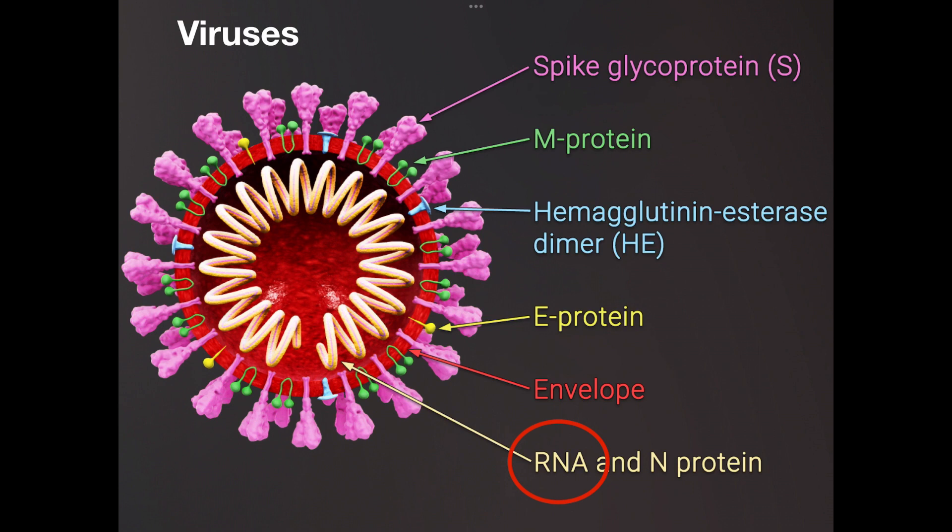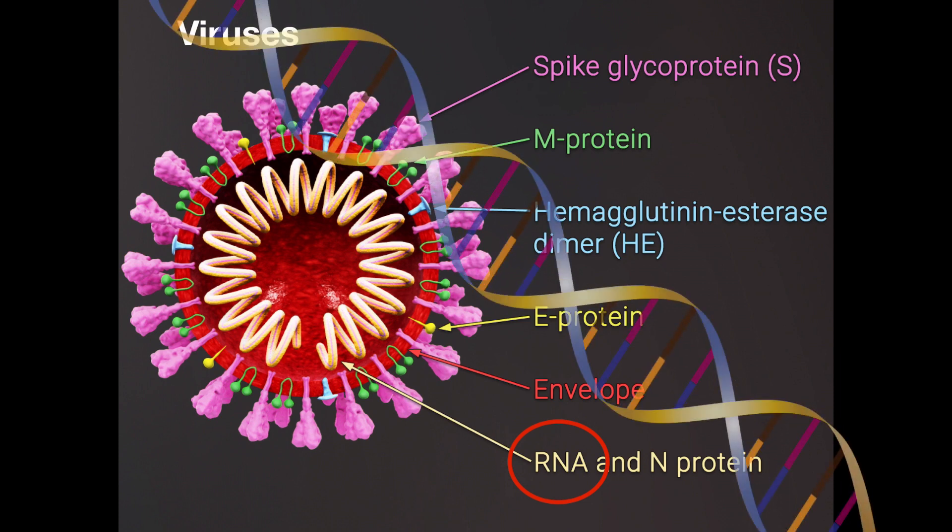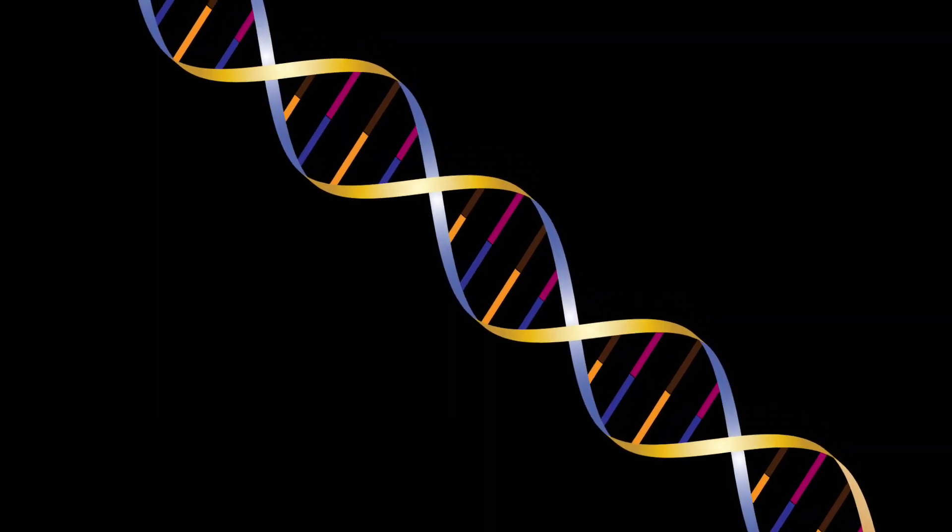Viruses in fact require a host cell in order to reproduce, and one of the key characteristics of living things is that they can reproduce. Therefore, viruses do not falsify our claim, and we can still say that DNA is the genetic material in all living organisms.